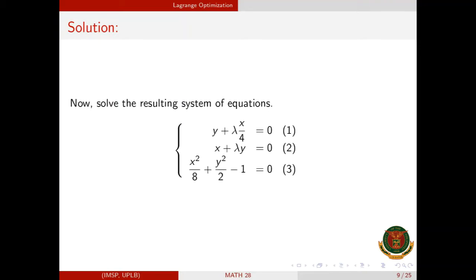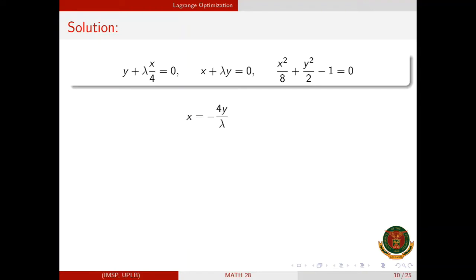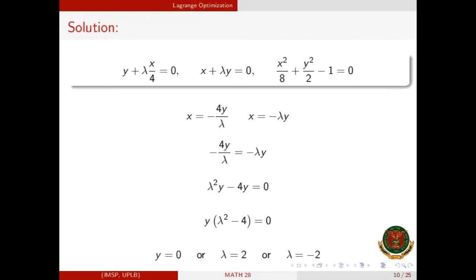The equation numbers are for referencing only. Solving for x from equation 1 gives x = −4y/λ, while solving from equation 2 gives x = −λy. Setting these equal: −4y/λ = −λy. Multiplying both sides by λ gives λ²y − 4y = 0. Factoring out y: y(λ² − 4) = 0, so either y = 0, λ = 2, or λ = −2.